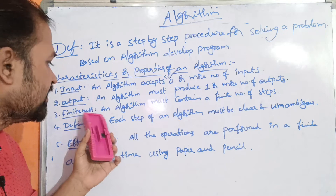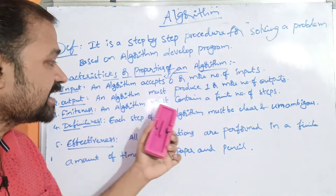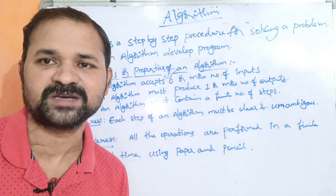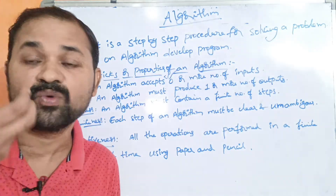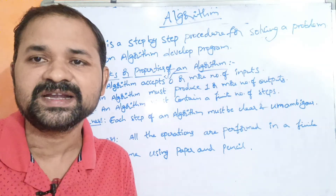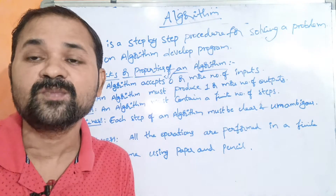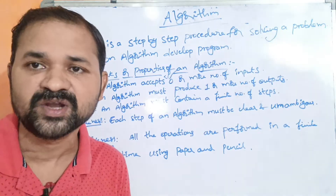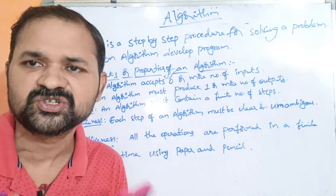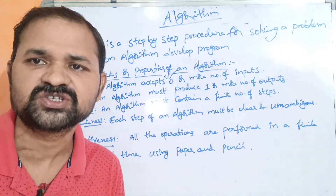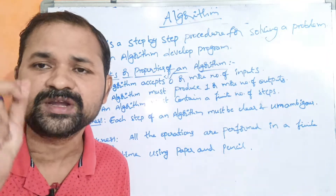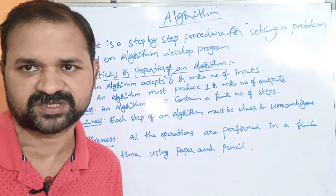Next is finiteness. An algorithm must contain a finite number of steps. Finite means countable — the algorithm must and should have a countable number of steps.